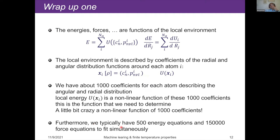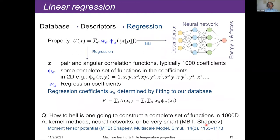We have typically 500 energy equations and around 150,000 force equations to fit simultaneously. One way forward is neural networks — you have 1,000 input descriptors and try to train a deep neural network to learn the functional relationship between descriptors and the single local energy output. However, we use regression methods, specifically something called kernel methods. Before explaining this, I want to briefly mention why standard linear regression won't work here.